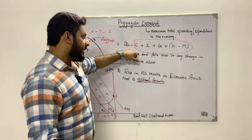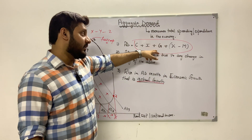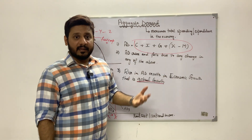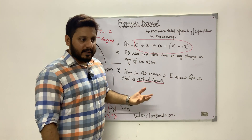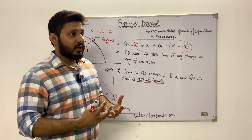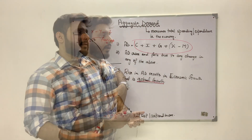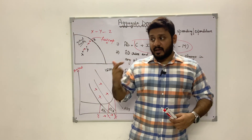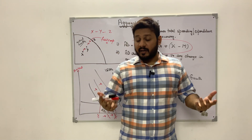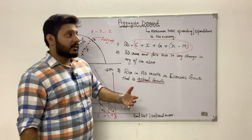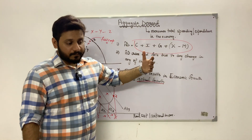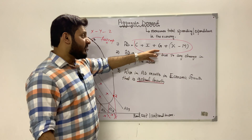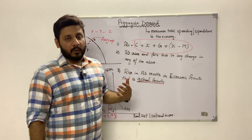Government spending includes both current expenditures — day-to-day spending such as wages of government employees — and capital expenditures such as investment in infrastructure, education, healthcare, technology, tourism, and training to improve labor productivity. All of this boosts aggregate demand, creates actual growth, and results in a rise in GDP. Then we have net exports — exports minus imports of the domestic economy.